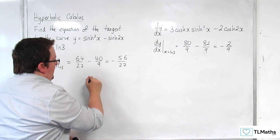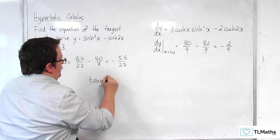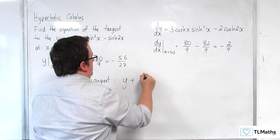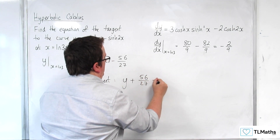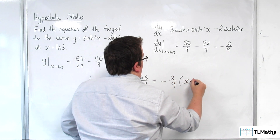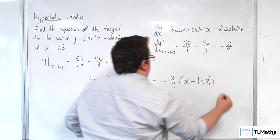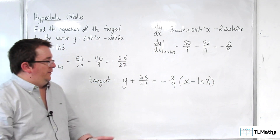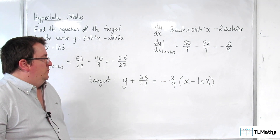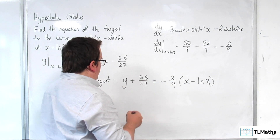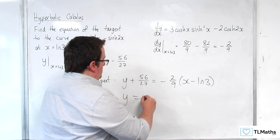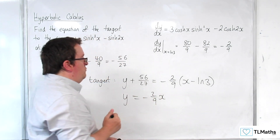So the tangent will be y minus y₁ equals m(x minus x₁), and that is the equation of the tangent. Now if you wanted to, you could manipulate this a little bit to get it into y = mx + c form, though that's not necessary.